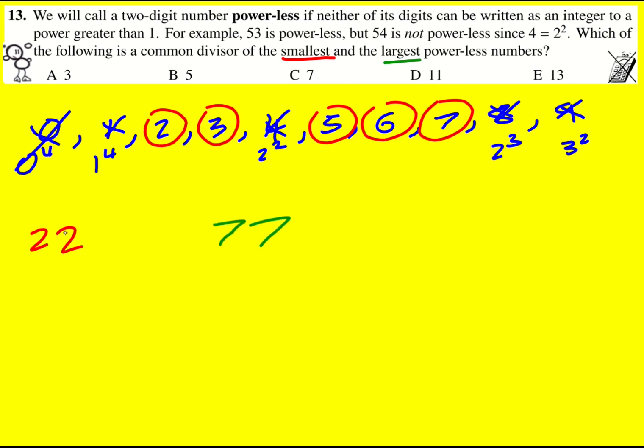So the common divisor to both of these, well this is two times 11, this is seven times 11. Therefore the common divisor is going to be 11.